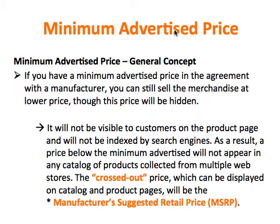Let's start with the general concept. What is the Minimum Advertised Price? Well, if you have a Minimum Advertised Price in the agreement with a manufacturer, you can still sell the merchandise at a lower price, though this price will be hidden. It will not be visible to customers on the product page and will not be indexed by search engines. As a result, a price below the Minimum Advertised will not appear in any catalog of products collected from multiple web stores.